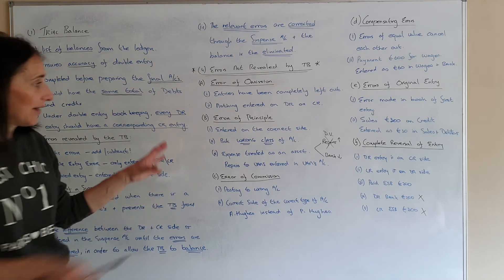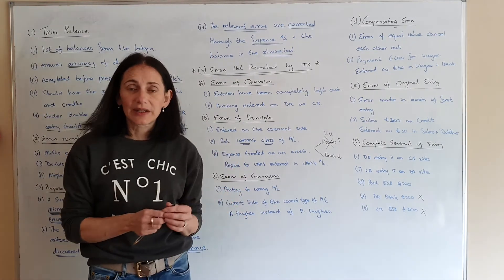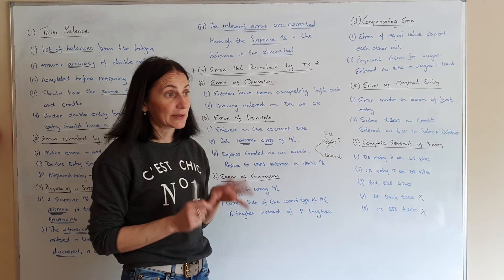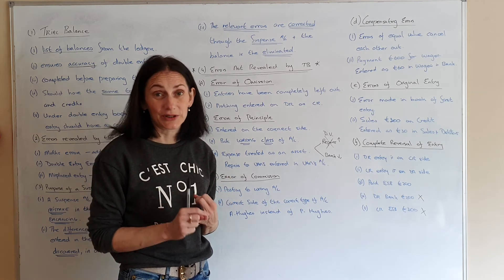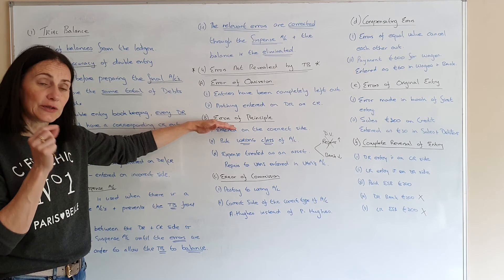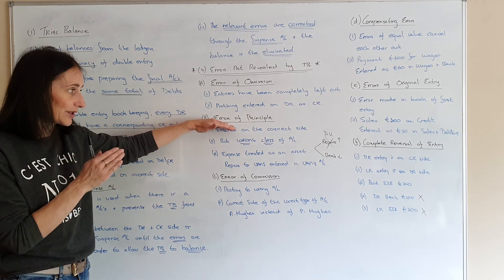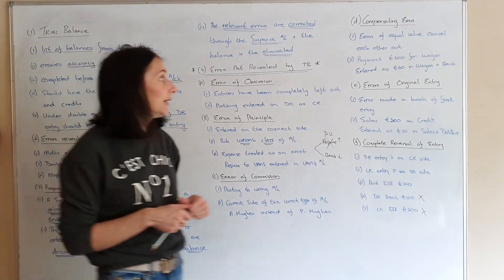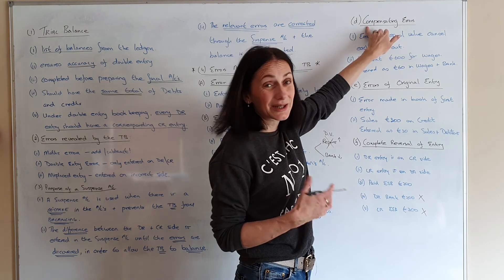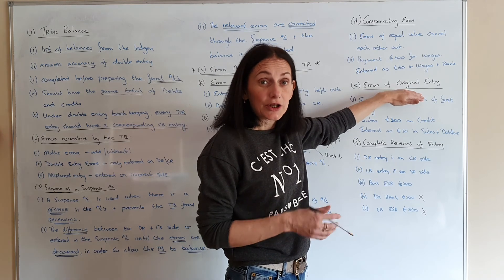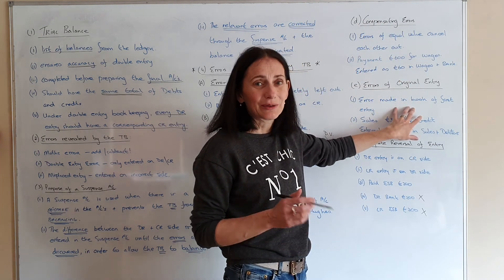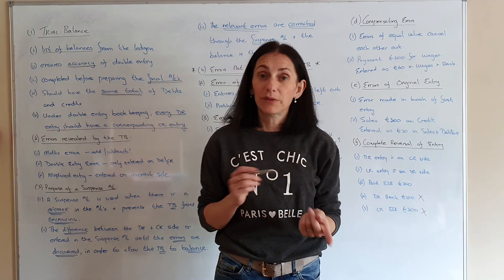You have to know these inside out. They could ask you in the exam to give an example of one of these entries from adjustments you've done, or just ask you to explain them. Remember, if explaining in the exam, you must give an example to get full marks where relevant. Error of omission — easiest one. Error of principle — hardest one: wrong type of account, always use the repairs versus motor vehicles example. Error of commission — two names mixed up. Compensating — wrong figure entered. Error of original entry — wrong figure in the books of first entry. Complete reversal — two correct accounts but put on the wrong side of both.